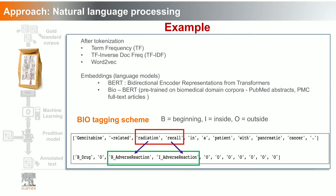You can use embeddings, which are pre-trained language models based on a corpus that also use neural networks. Recently in NLP these have been providing very promising results, especially when you have a low number of data points. BERT is pre-trained on book chapters and English Wikipedia. BioBERT is specifically trained on the biomedical domain on PubMed abstracts and full-text articles. Another approach is BIO tagging — for example, 'GemCitabine-related radiation recall in a patient with pancreatic cancer': radiation recall is an adverse reaction, and you identify the beginning and inside of this entity versus what is outside, and similarly for the drug entity.